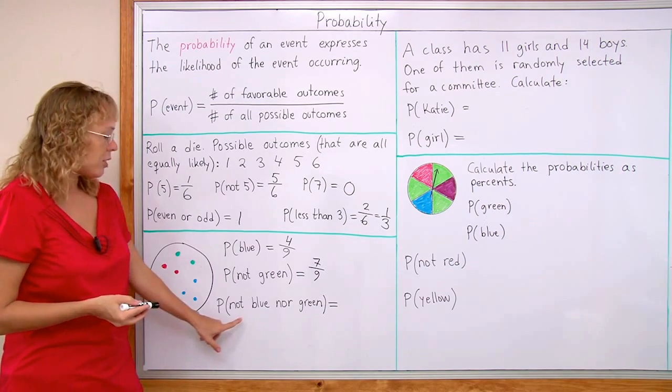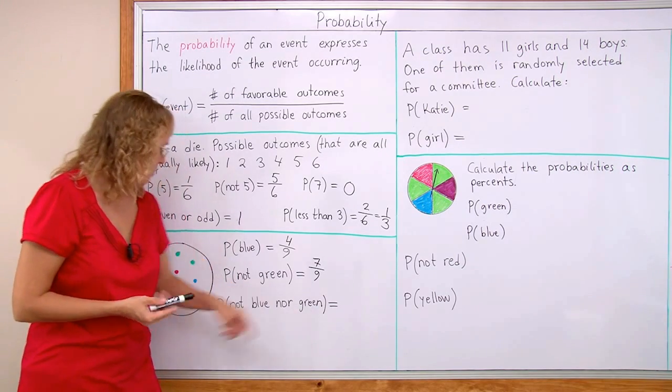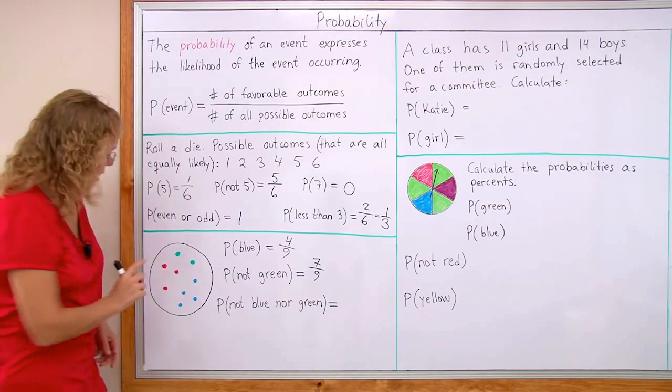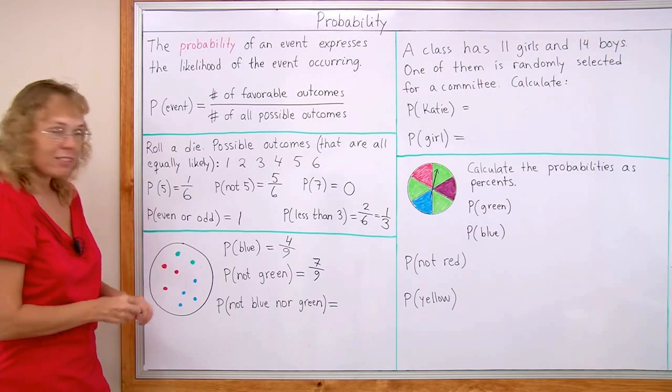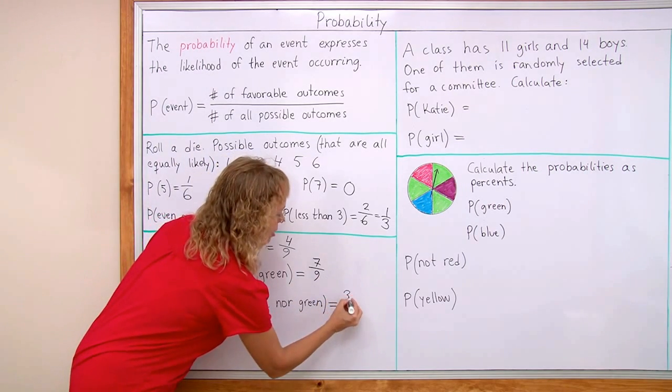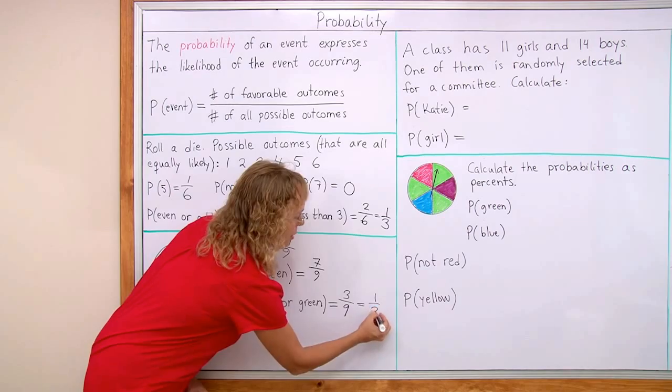And the probability of not blue nor green. That would mean that we would get the red ones. So there's three red ones. And nine in total again. So the probability is three ninths or one third.